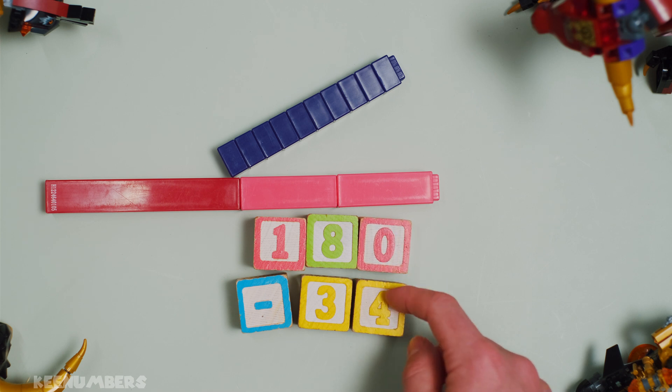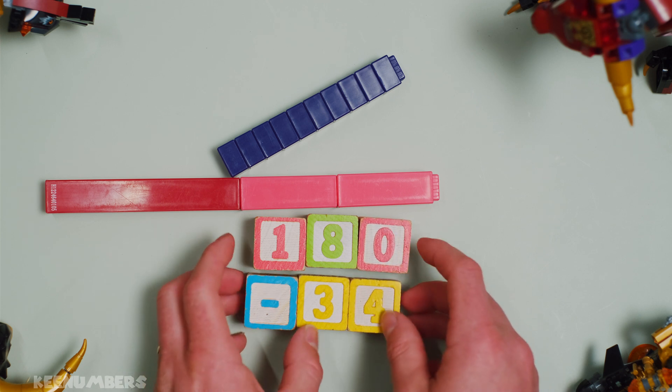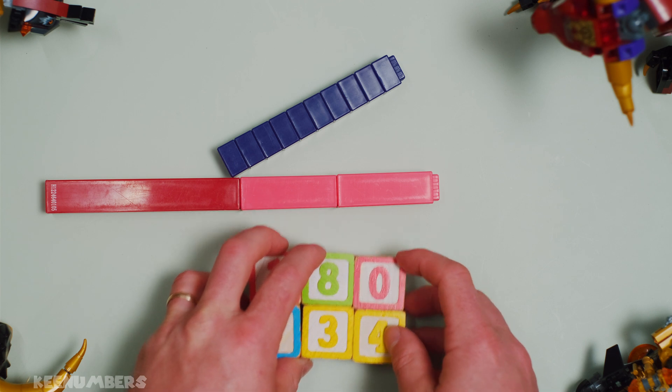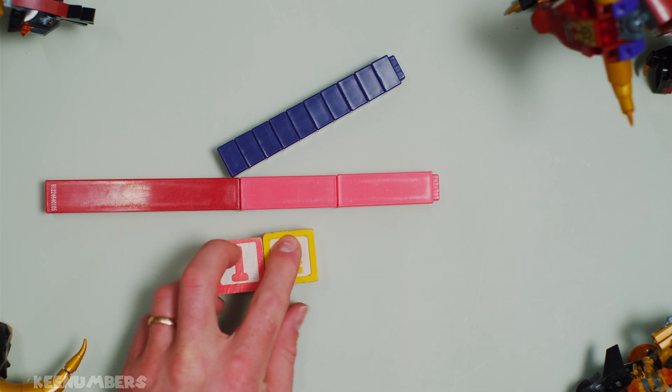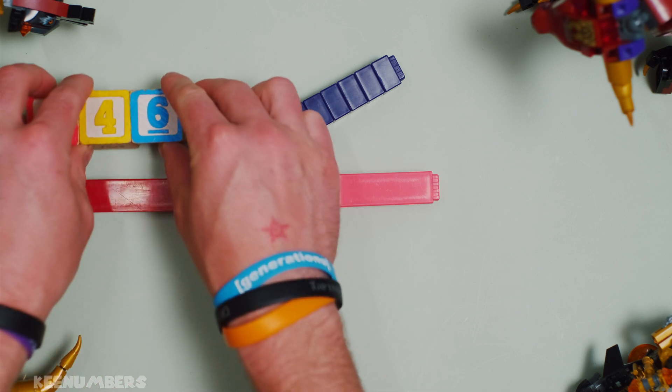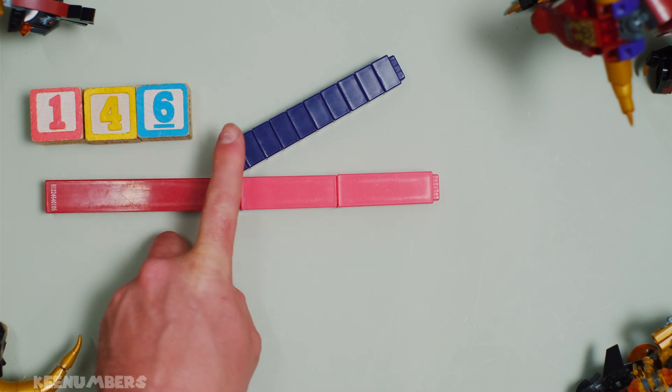And 0 minus 4, that's just minus 4. So in other words, you're going to get 150 minus 4, which is also known as 146.